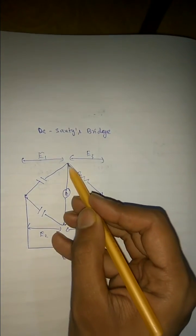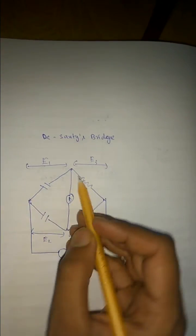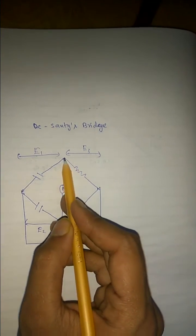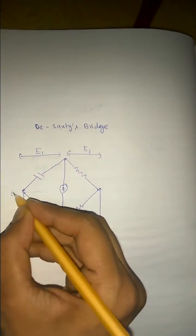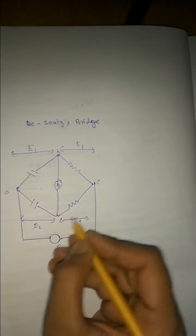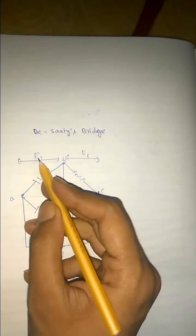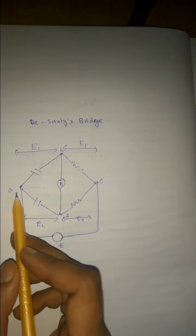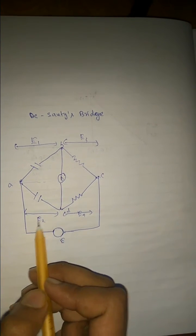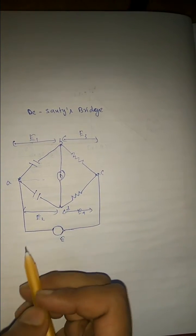E1 means the potential between these two points, E2, E3 means potential between these three points. Suppose let me give it a name A, B, C, D. So between A and B potential is E1, between B and C potential is E3, between A and D is E2, between C and D it's E4.